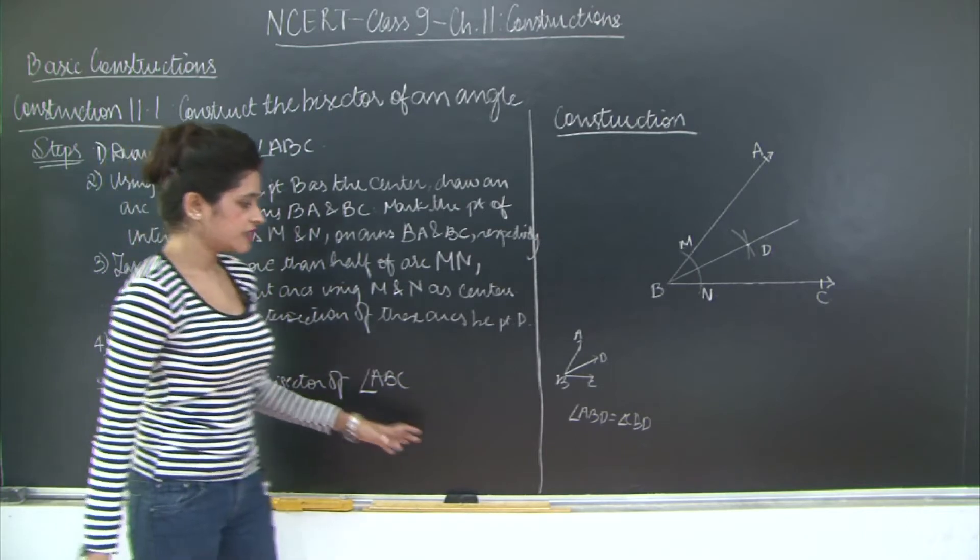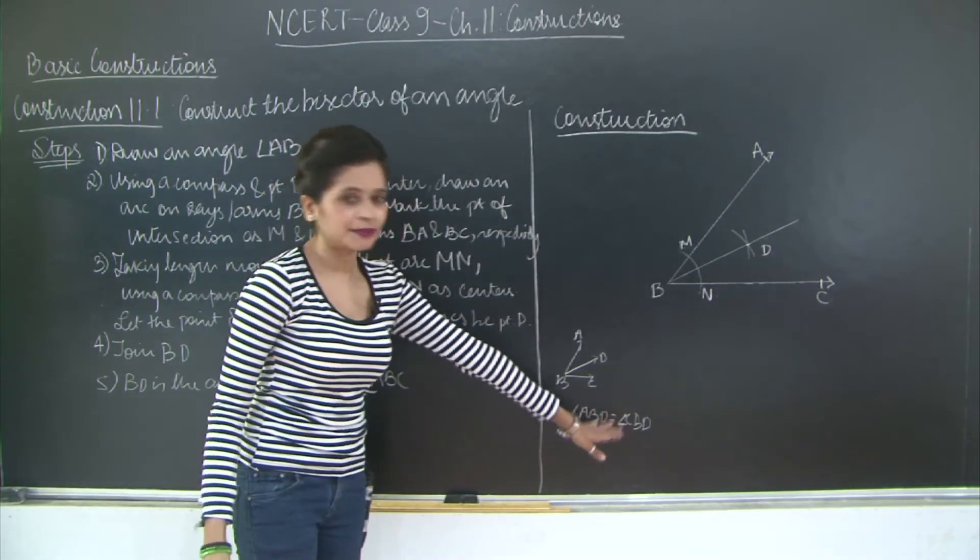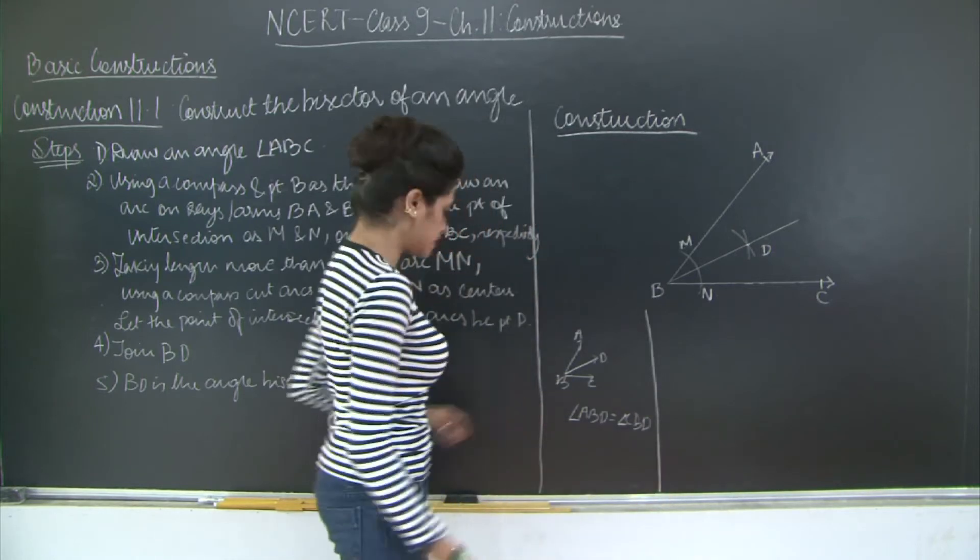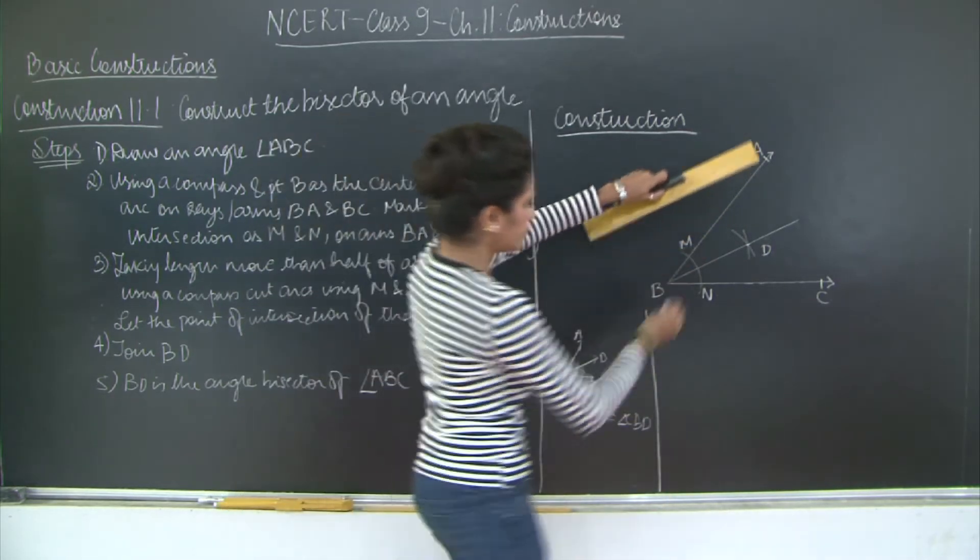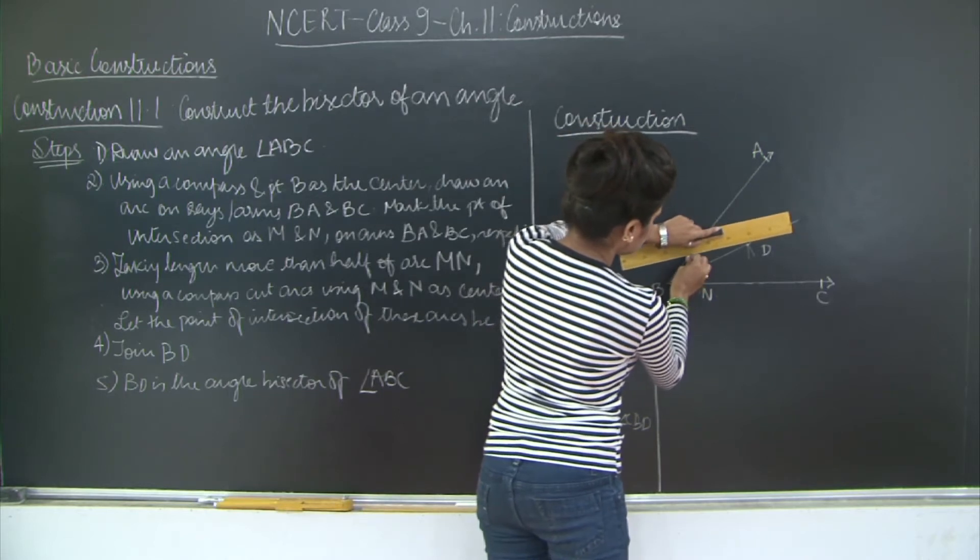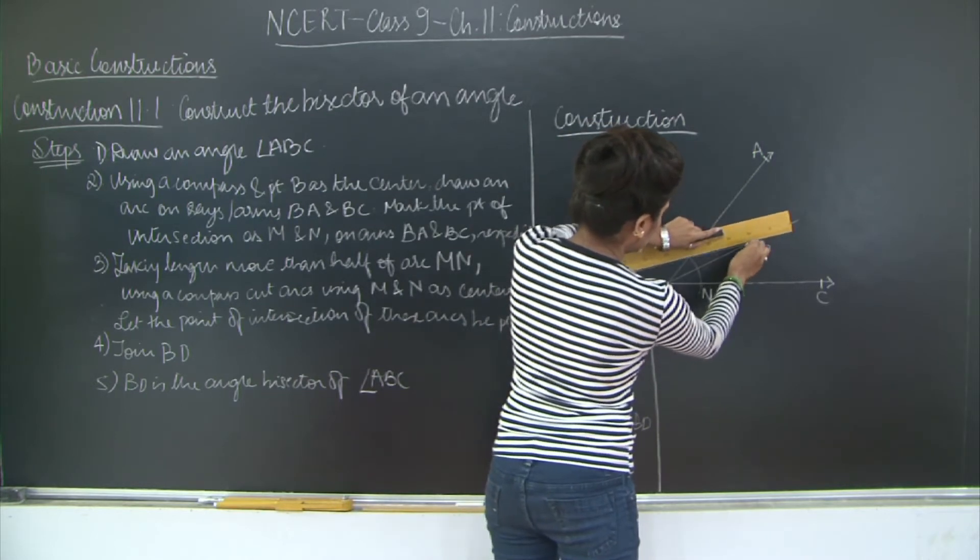So now let us go ahead and prove that angle ABD is equal to angle CBD. So how are you going to prove this? You will need to join M to D and N to D.